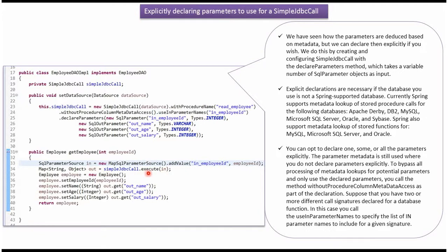Here I am calling the execute method of the SimpleJdbcCall object and passing the SqlParameterSource object. This method executes the stored procedure based on the input parameter value and returns a map. This map contains the output parameters and their corresponding values. I am getting each output parameter value and setting it to the employee object properties, and finally returning the employee object.